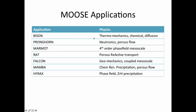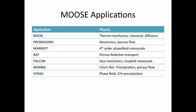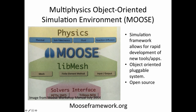These are MOOSE applications that exist at INL. Most of these you can't use unless you're actually there, but this shows what's been done with it. They have BISON for thermal mechanics, chemical and diffusion; PRONGHORN for neutronics and porous flow; MARMOT for fourth-order phase field; and more. When you use MOOSE, you can write your own application, or for simple problems, just use the physics module you need. For instance, for a solid mechanics problem, you could use the solid mechanics or tensor mechanics module.